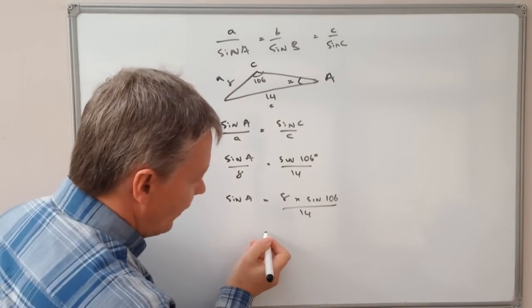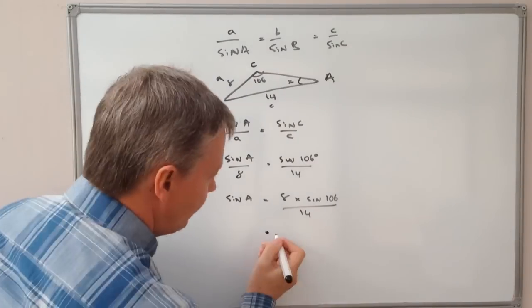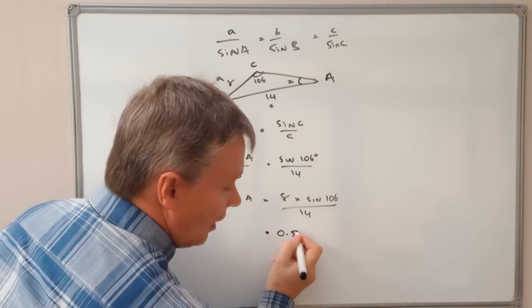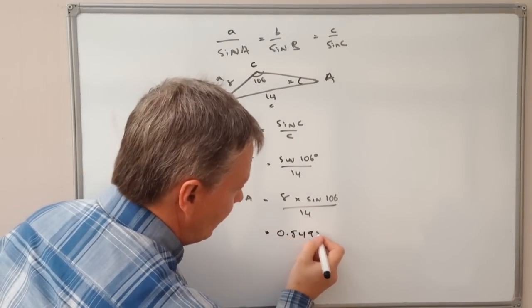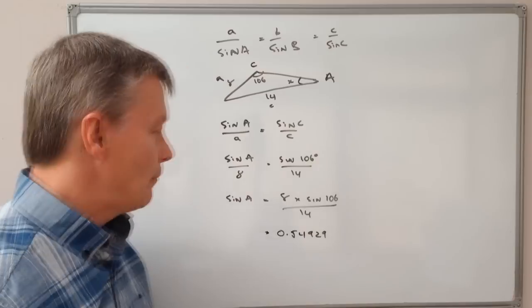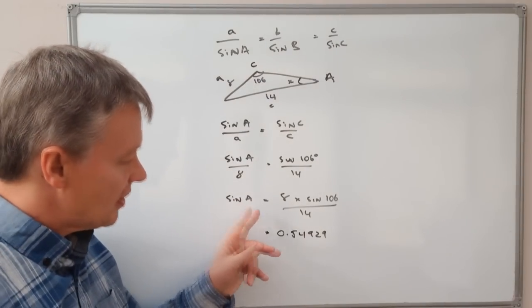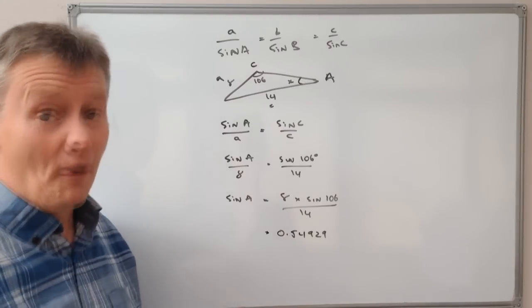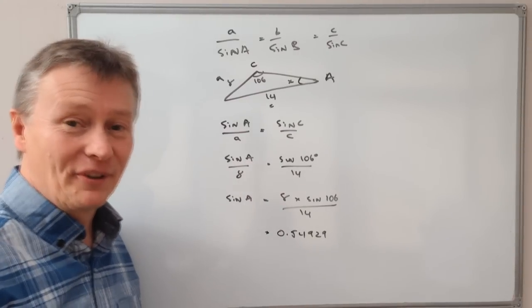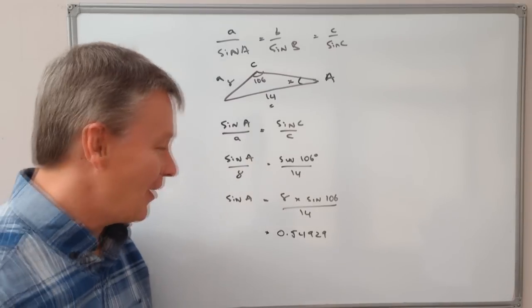Okay, if I calculate that in my calculator, I'll now get a value of 0.54929. And because that's the value of the sine of A, I need to use inverse trigonometry. And again, if you have a look at one of the other videos, that'll tell you a little bit about that.